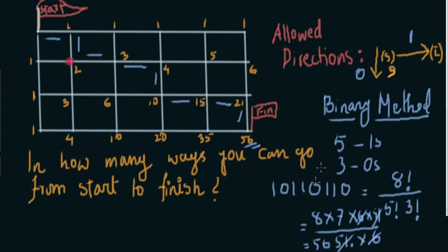But this one was way easier. I am calling it easier because this scales really well. Now suppose you are given a grid of like 20 times 30. In there, doing this dynamic programming solution is going to take a lot of time. You'll have to do a lot of summation and things like that. Here, if you do it by the binary method, it's much easier. You'll almost directly get the answer.